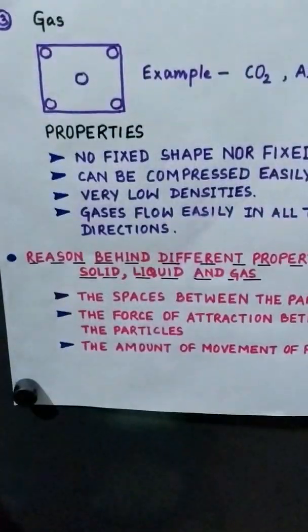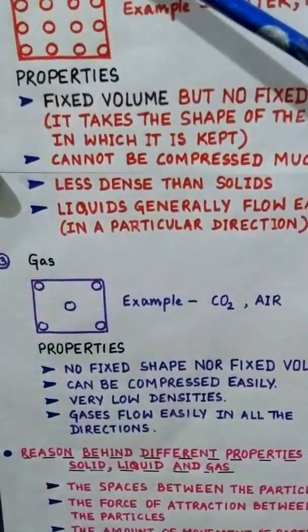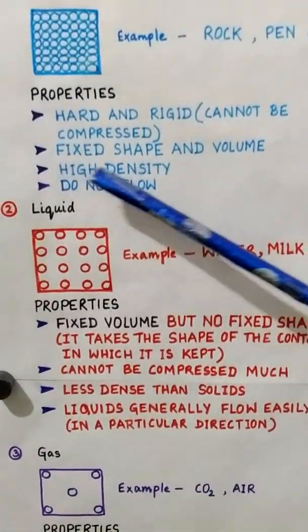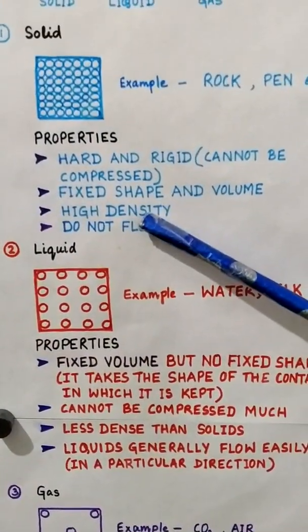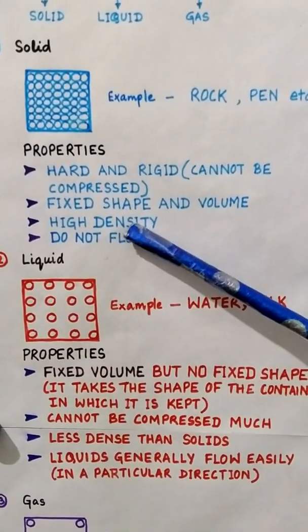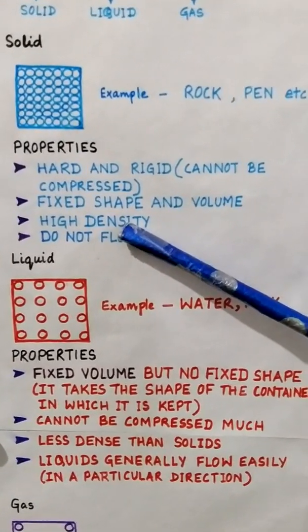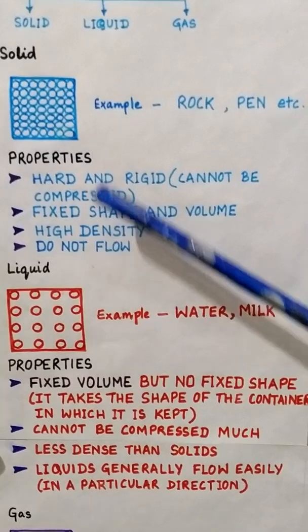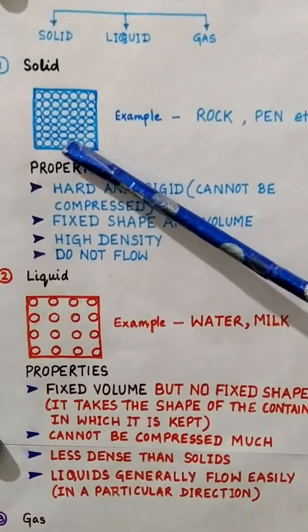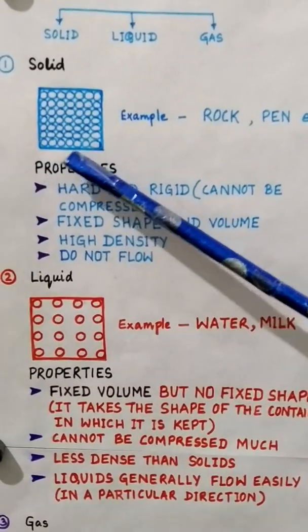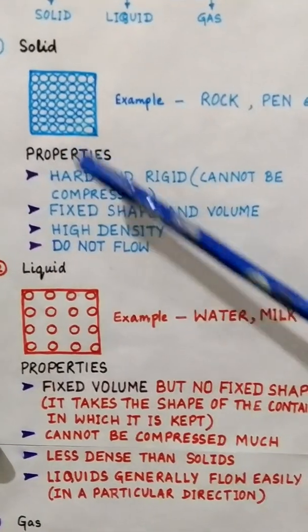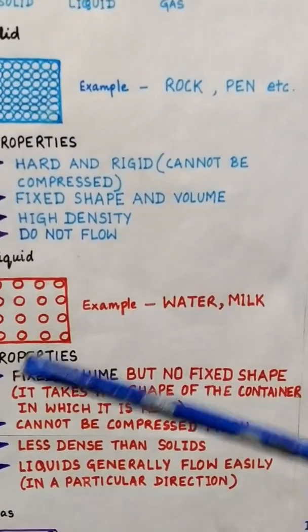The third property of solid is that it has high density. Density is the ratio of mass and volume. More number of particles gives more mass, and definitely when it has more mass in a given volume, the density of solids is high.